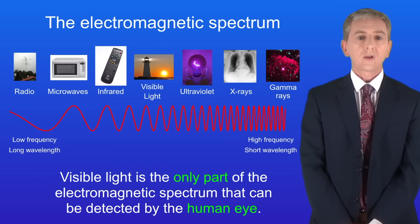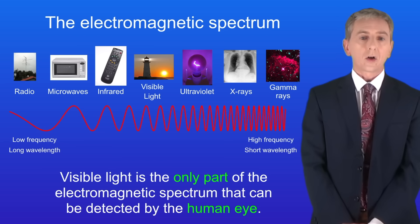So we've got radio waves, microwaves and infrared. Then we have visible light, ultraviolet light, X-rays and gamma rays.